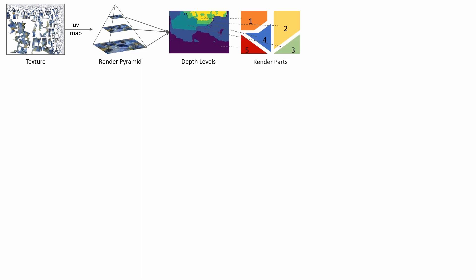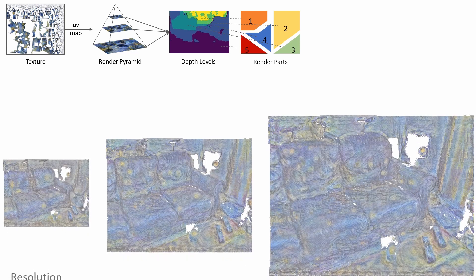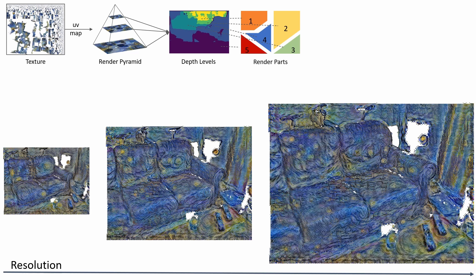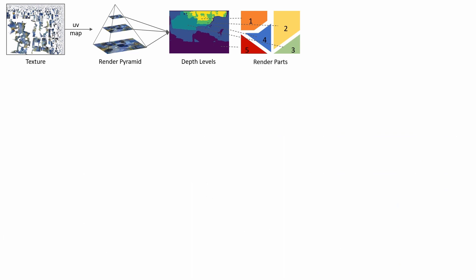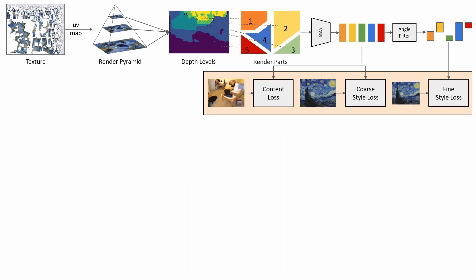We sample the texture at multiple resolutions, resulting in a render pyramid of the current pose. Using depth, we divide the image into parts — we take parts in the background from larger resolutions. Since stylization patterns become smaller when optimizing at a larger resolution, our patterns are smaller in the background of an image.